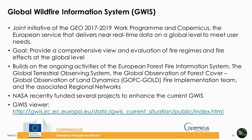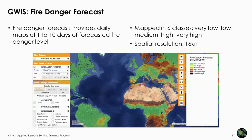The GWIS viewer can be found at the website listed here. Next, I will be showing you some features of the viewer. The viewer has several different components, including fire danger forecast and rapid damage assessment. The fire danger forecast provides daily maps of 1 to 10 days of forecasting fire danger level. This forecast uses meteorological data received daily from the European Center for Medium-Range Weather Forecast. It's mapped as very low, low, medium, high, and very high, and it has a spatial resolution of 16 kilometers.